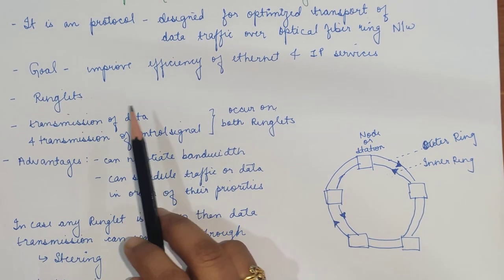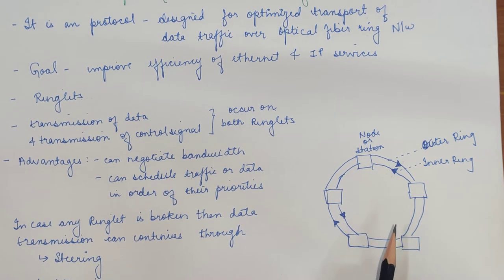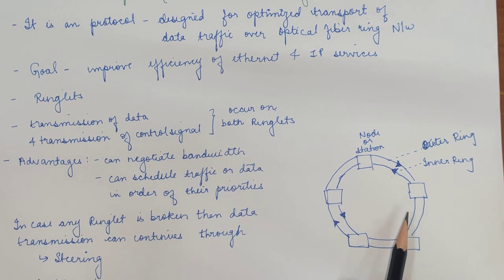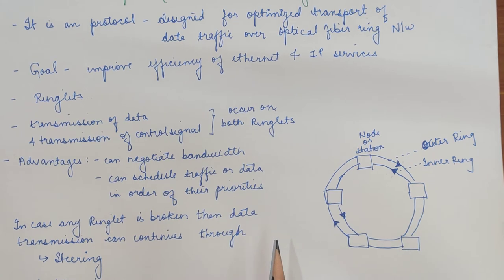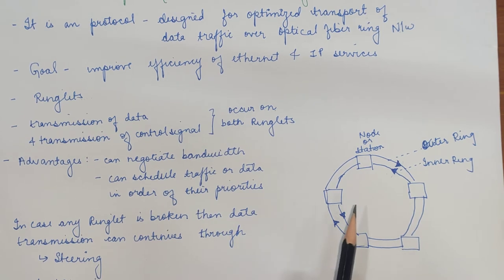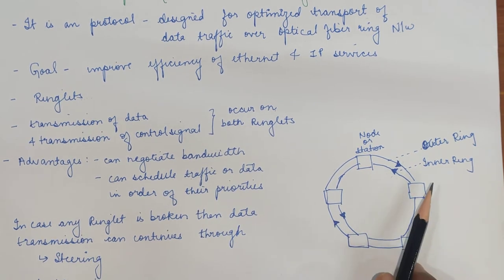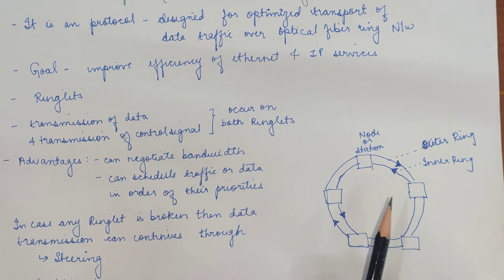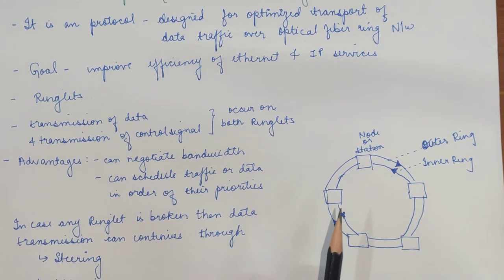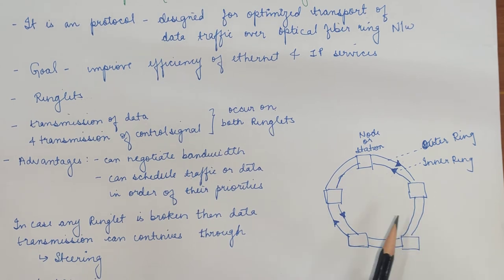Transmissions can occur along both rings, which helps utilize the total bandwidth. This is different from the previous token ring, where data could only be transferred using one ring and the second ring was kept for backup. In RPR, both rings can be used for the transmission of data.